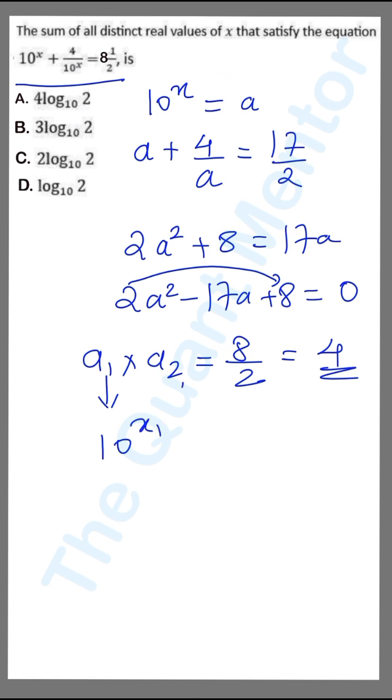Suppose the second root is 10 raised to x2. The product of these two is nothing but 4, so I'll get 10 raised to x1 plus x2 equals 4. Converting this into logarithms, I will get x1 plus x2 is log of 4 to the base 10.